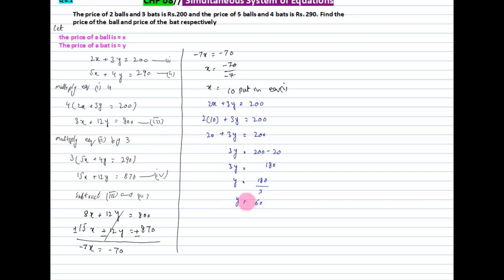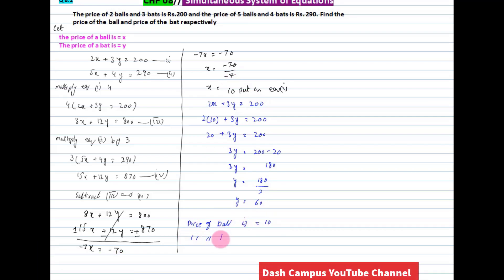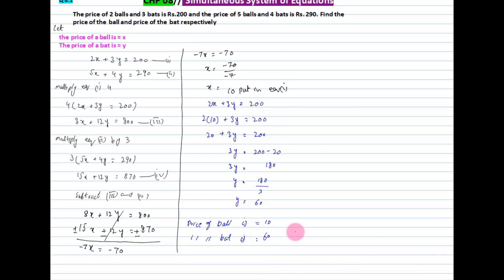So students, we have solved for both x and y. Since x represented the price of the ball, the price of the ball is Rs. 10. And since y represented the price of the bat, the price of the bat is Rs. 60. This question is now solved.